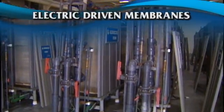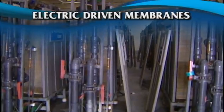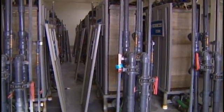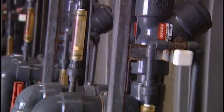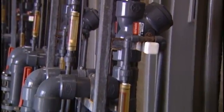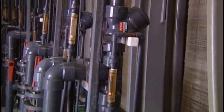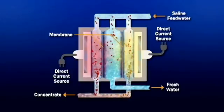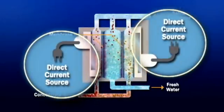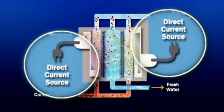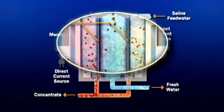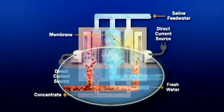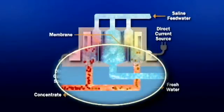Electric-driven membranes purify water by moving ions across a membrane using an electric current. They are used in electrodialysis, or ED, and electrodialysis reversal, or EDR. In ED, ions are transferred through a membrane as a result of a direct electric current applied to the solution. The current carries ions through the membrane from the less concentrated solution to the more concentrated one, and the high concentrations are then removed.